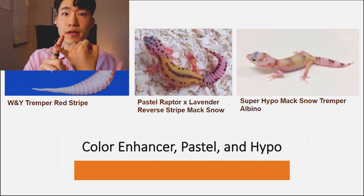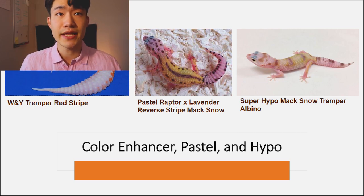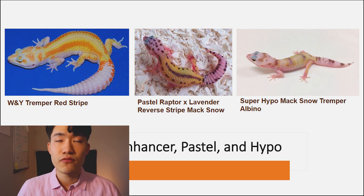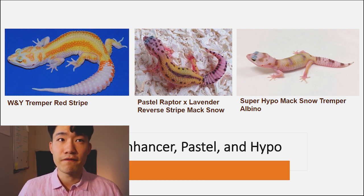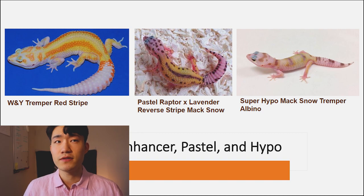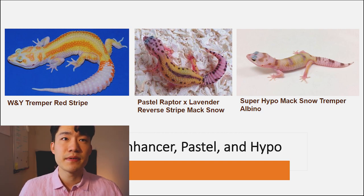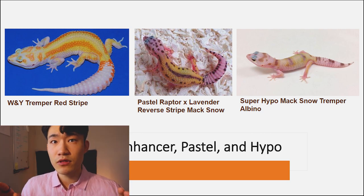WY is really popular because it gives bright colors, hypo patterns, and other effects. Here are some examples of what happens when you mix WY with other genetics — it definitely boosts up the colors, acts as a color enhancer, and enhances pastel and hypo traits. I've pulled up example photos on the slide. On the left side is a WY tramper red stripe, which one of my females is going to look like. I haven't received her yet, but I'll keep you guys updated.